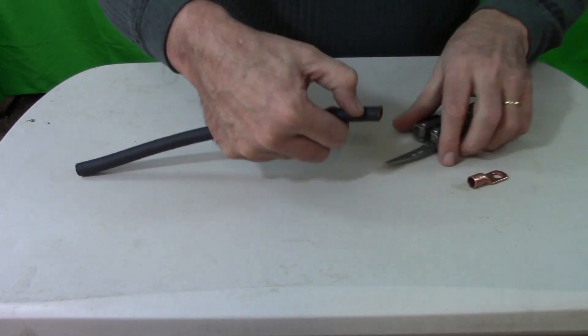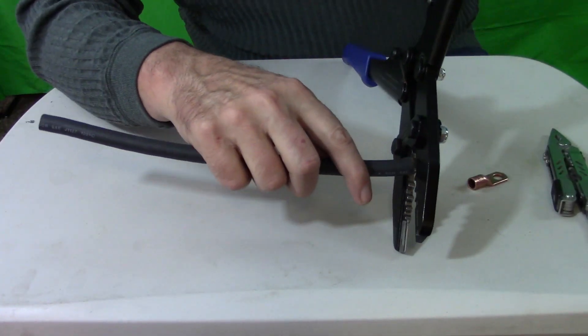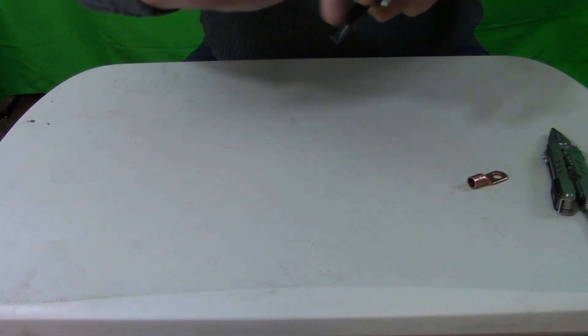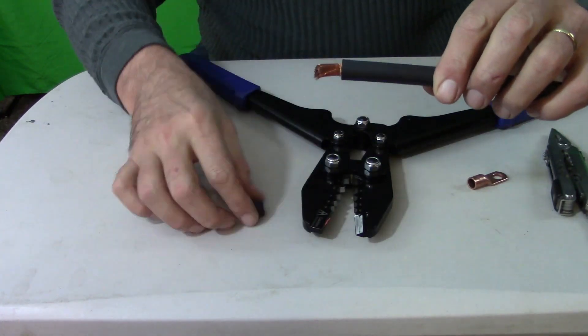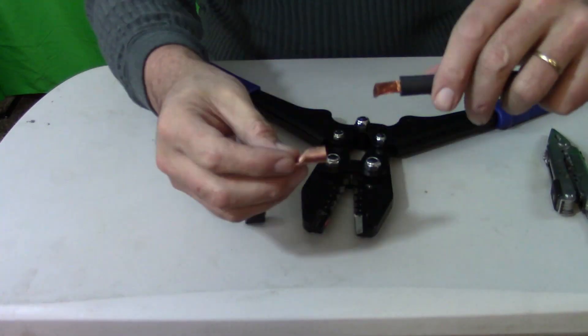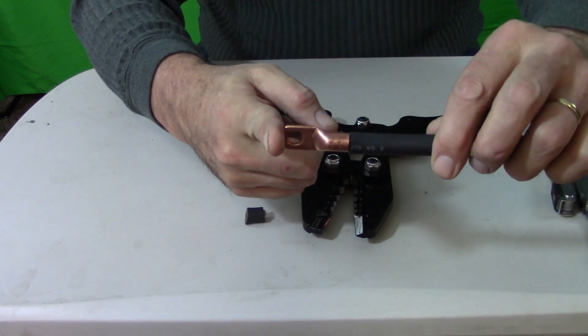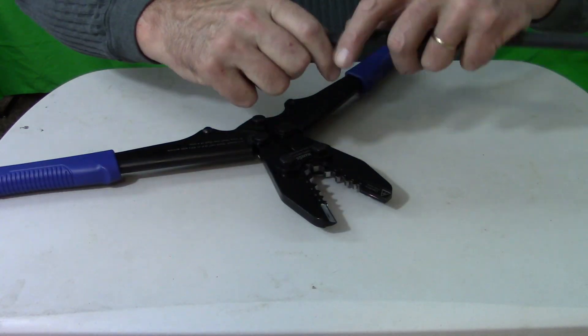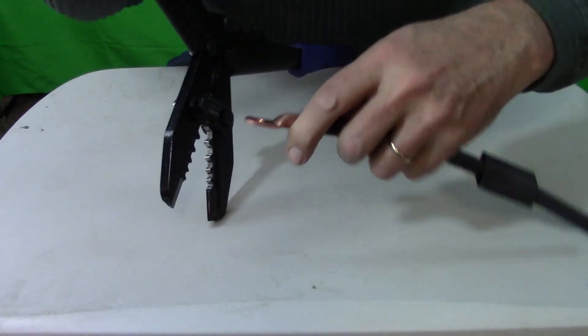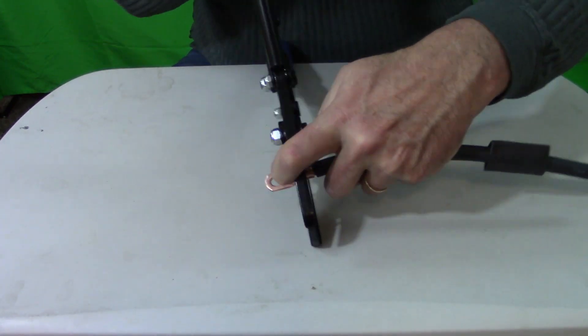So we're going to do it one more time. This one is actually two gauge wire. Again, score, put it into the crimper, just light pressure, kind of twist it back and forth and, boy, come right off. Make sure when you put your lugs on that you get all of the wires in. You don't want any stragglers. You don't want to cut any of the wires.